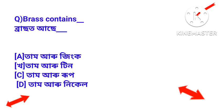Question: Brass contains which elements? Answer: Brass contains copper and zinc.